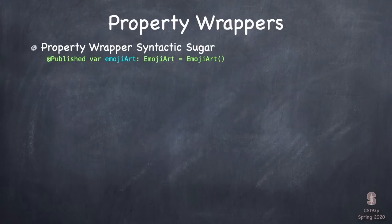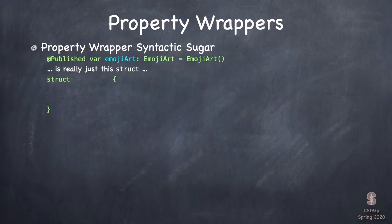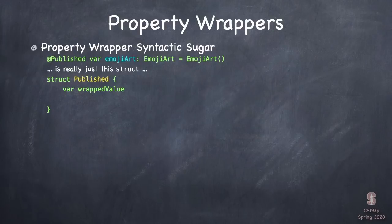Let's talk about that syntactic sugar using this example: @Published var emoji of type EmojiArt equals EmojiArt. What's really happening here? This line of code is actually creating a struct of type Published. Inside this struct, there is a very important var called its wrappedValue. For most property wrappers, the type of this wrappedValue var is the type of the var it's wrapping — EmojiArt in this case.